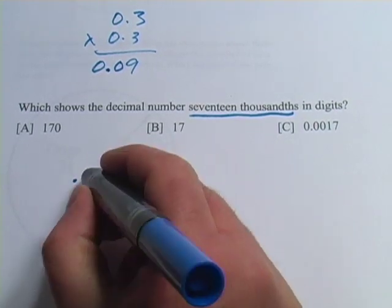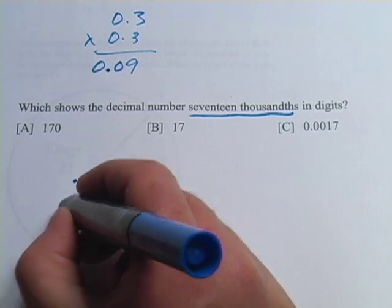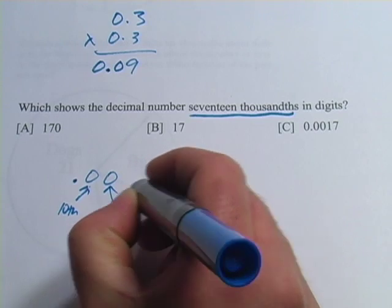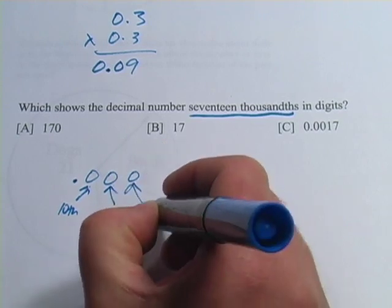Well, after the decimal point, you have tenths, and then you have hundredths, and then you have thousandths.